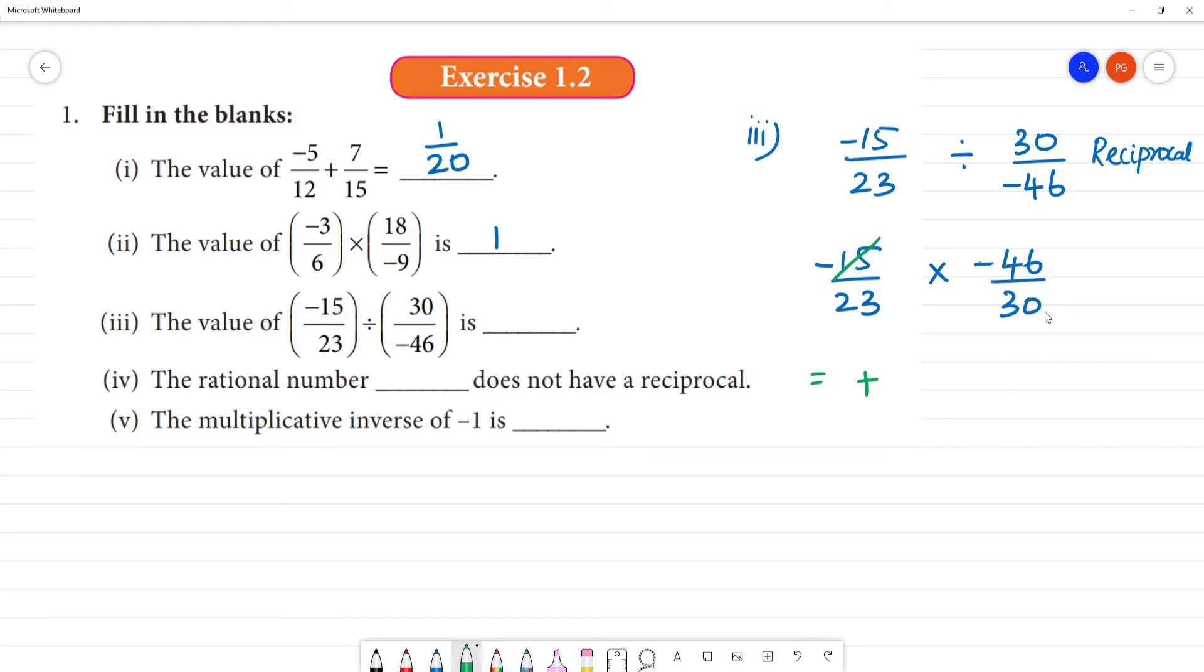Then, 15 is 15, 2 into 15 is 30. Here, 23 is 23. 2 into 23 is 46. So here 2, here 2 cancel. 1 into 1 is 1, 1 by 1. This is plus 1. This minus into minus is plus 1. This will equal 1.